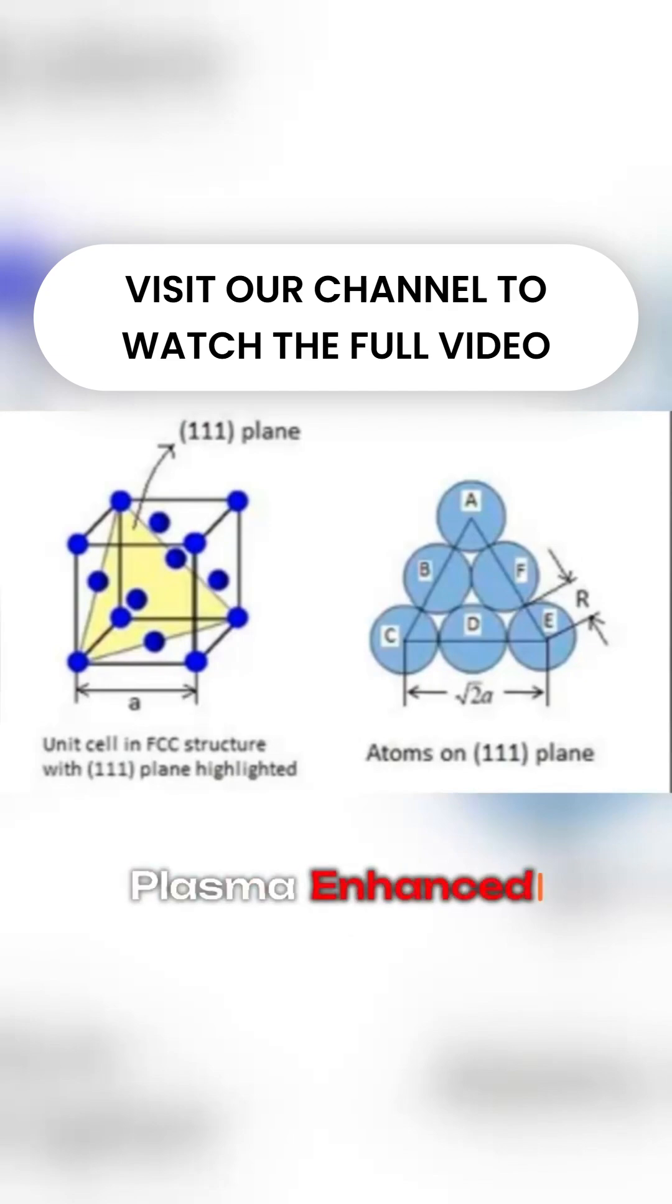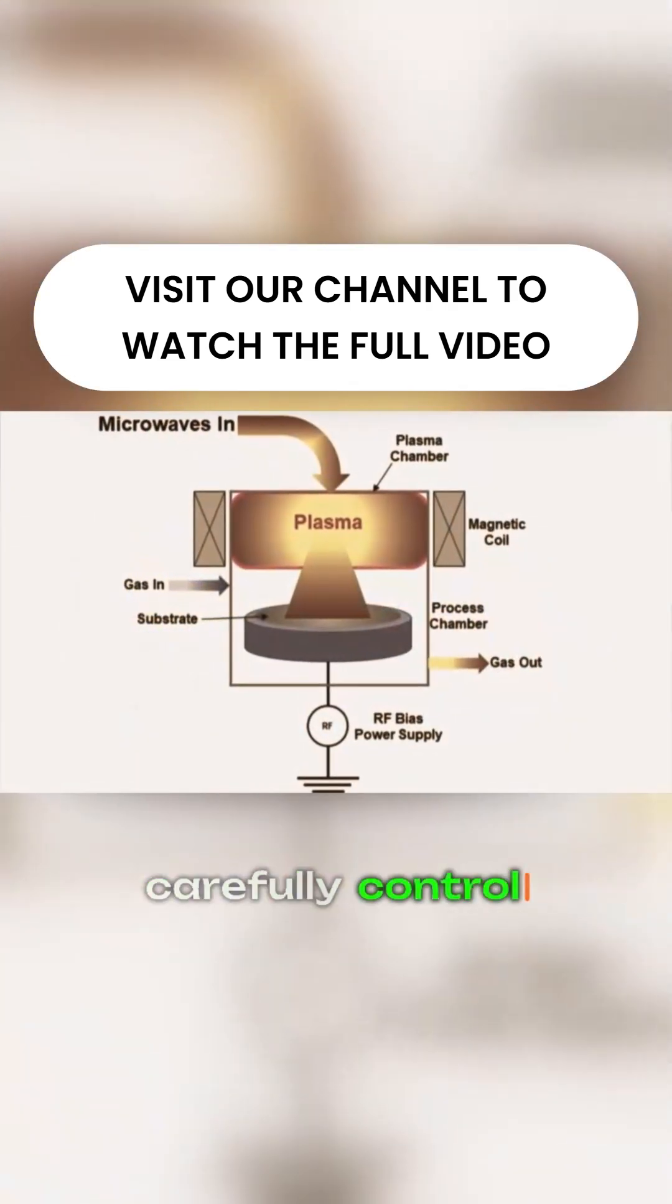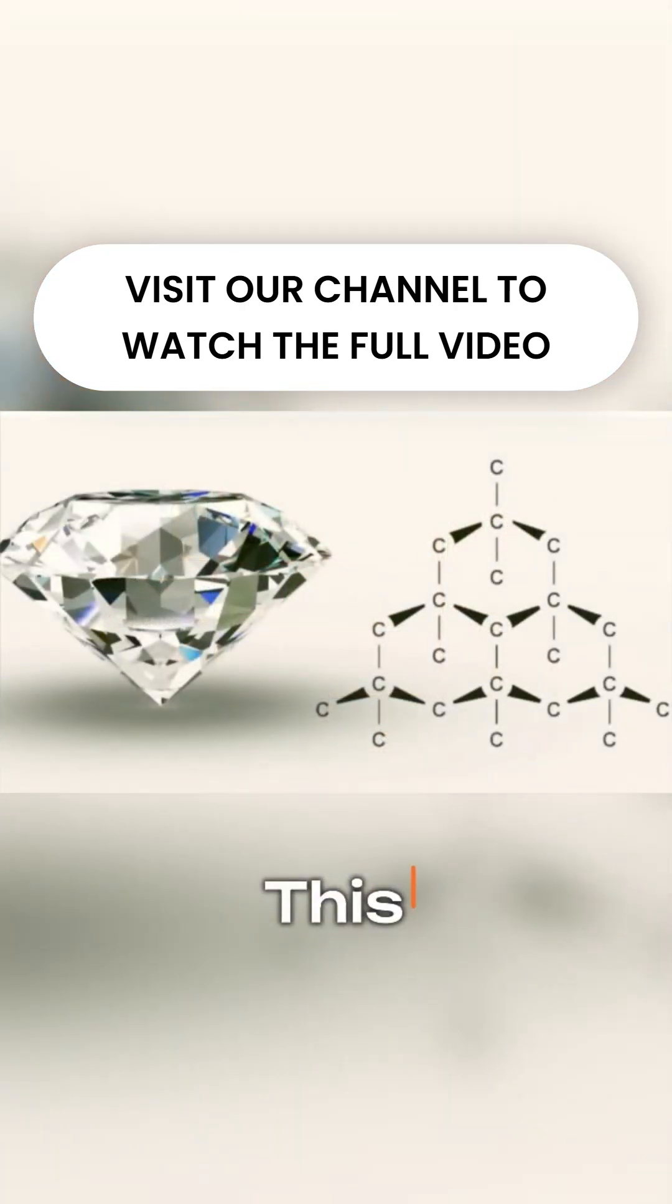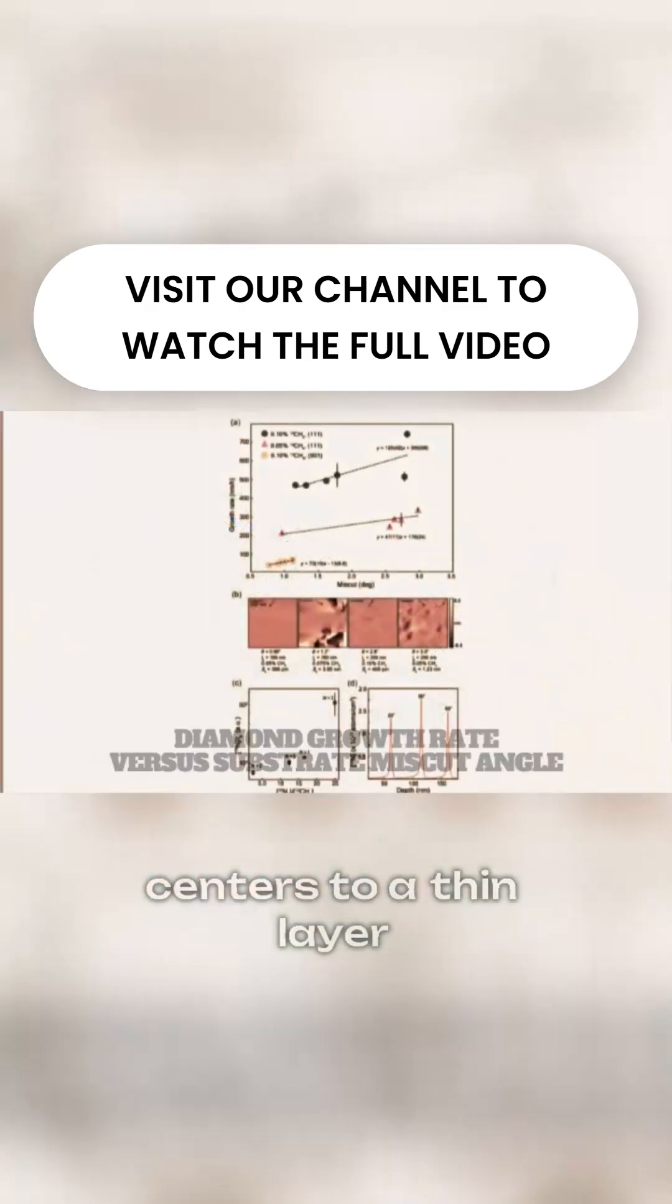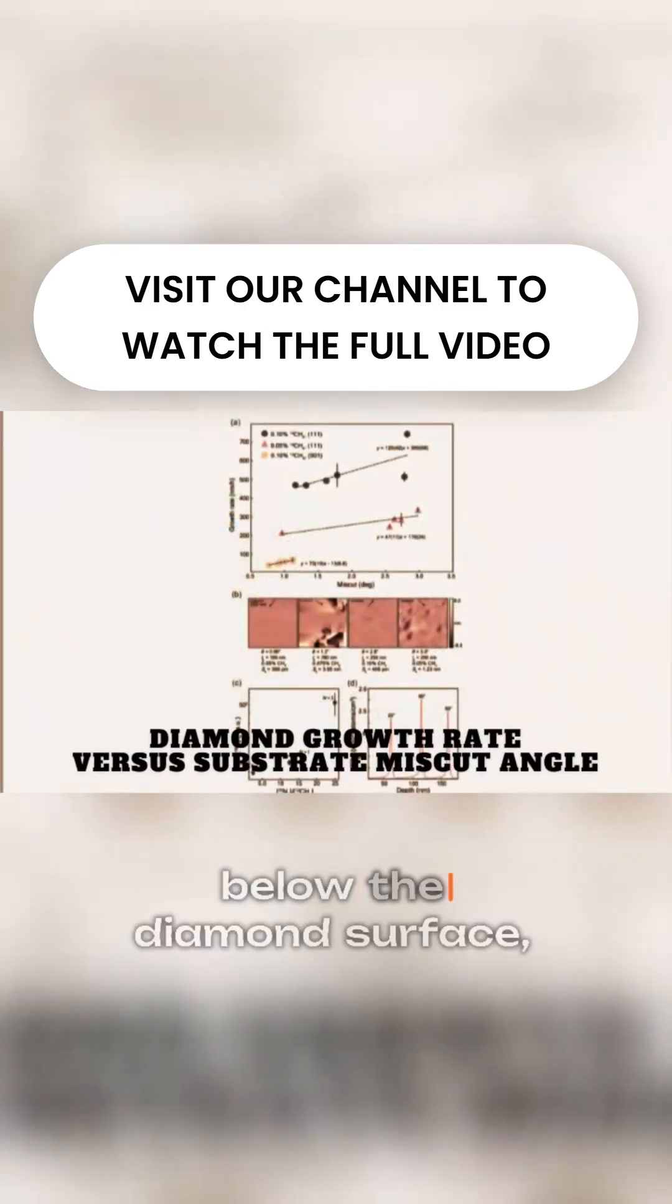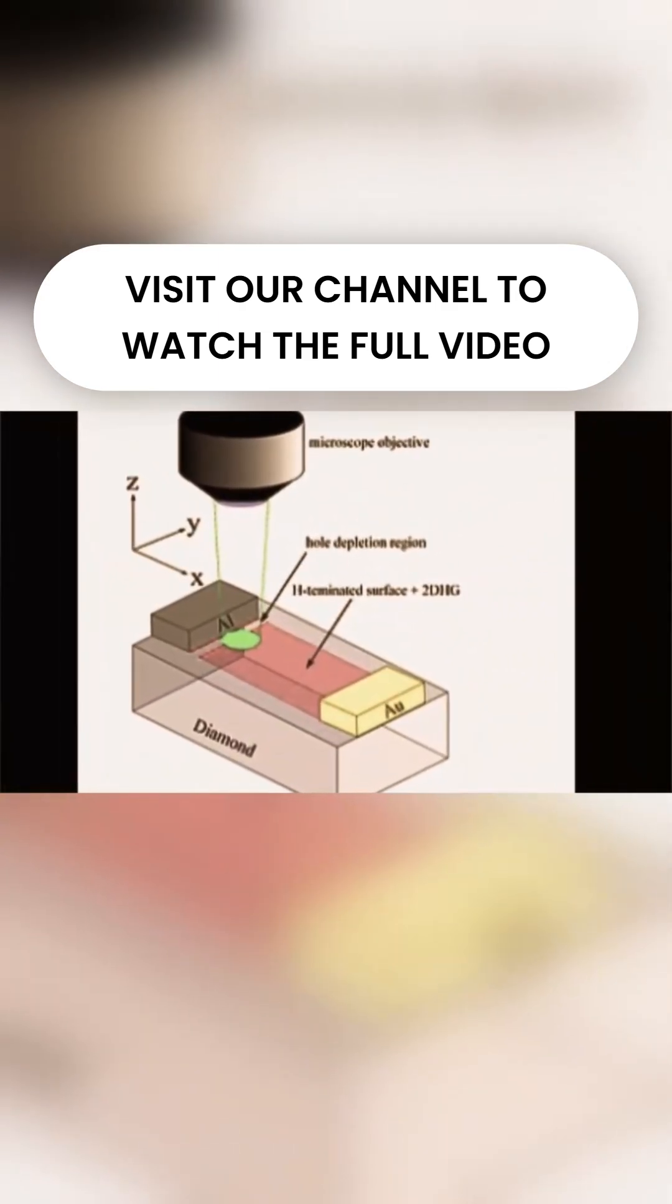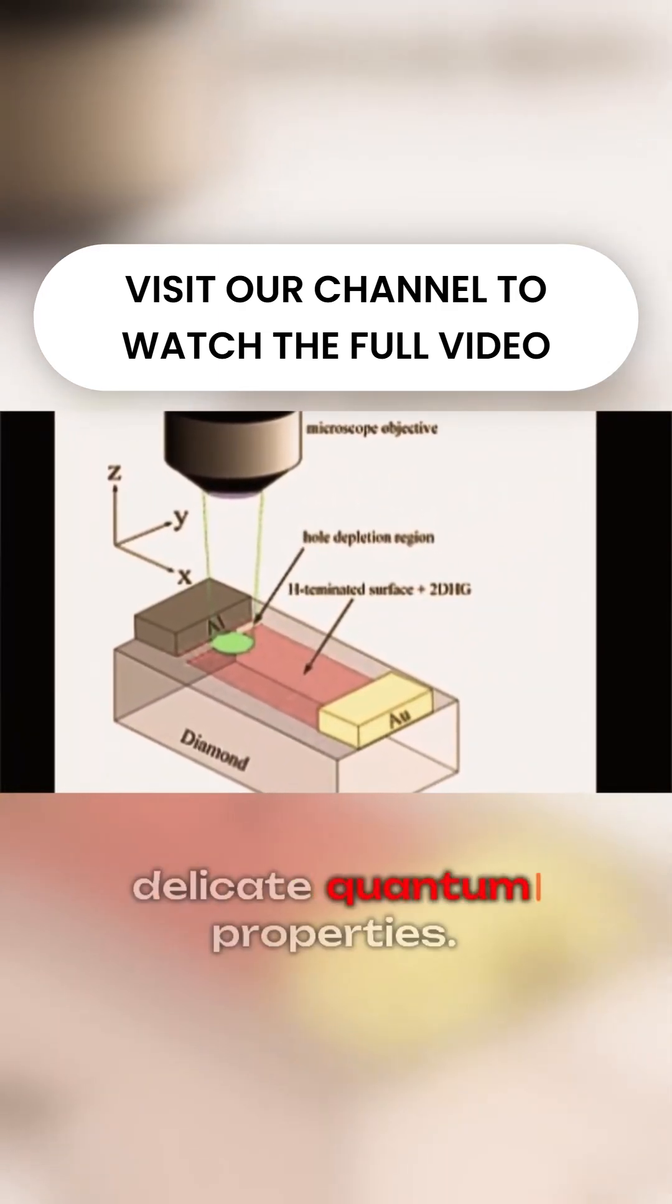They also use Plasma Enhanced Chemical Vapor Deposition, PCVD, to carefully control the number, position, and depth of NV centers. This allows them to confine the NV centers to a thin layer just nanometers below the diamond surface, close enough to detect external signals but protected enough to preserve their delicate quantum properties.